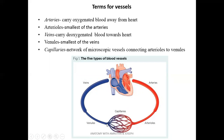Capillaries unite to form venules. Smaller venules join to form veins. Larger veins are called vena cava — the superior and inferior vena cava — which drain into the heart. Capillaries are microscopic vessels that cannot be seen with the naked eye and are present at the tissue level.